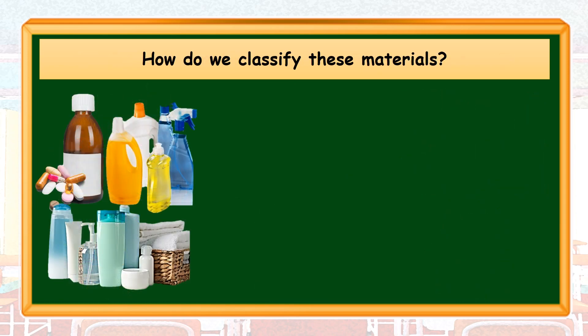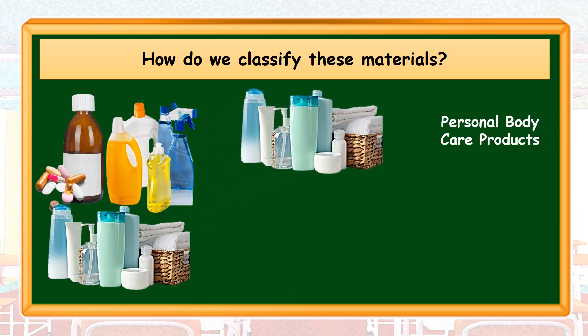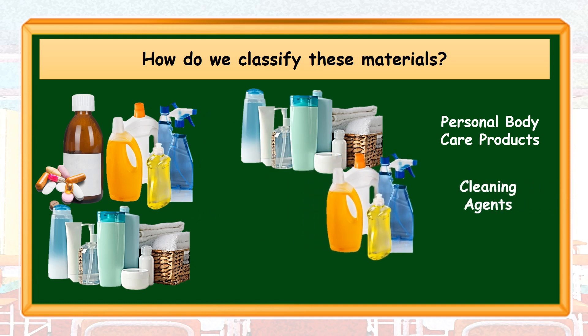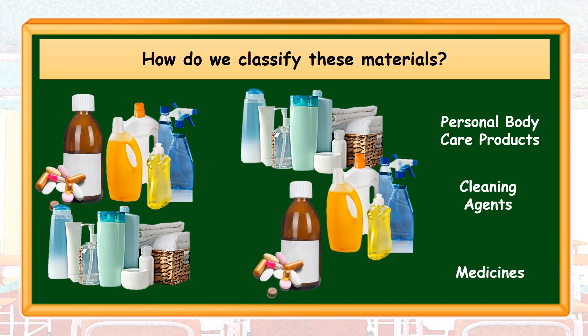How do we classify these materials? The materials that we see at home, in school, and in the community can be classified as: personal body care products, cleaning agents, and medicines.